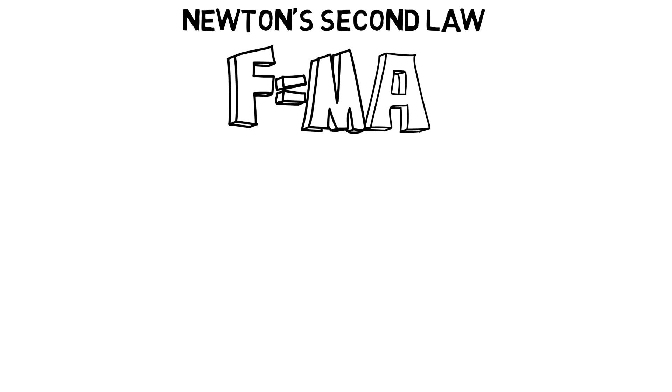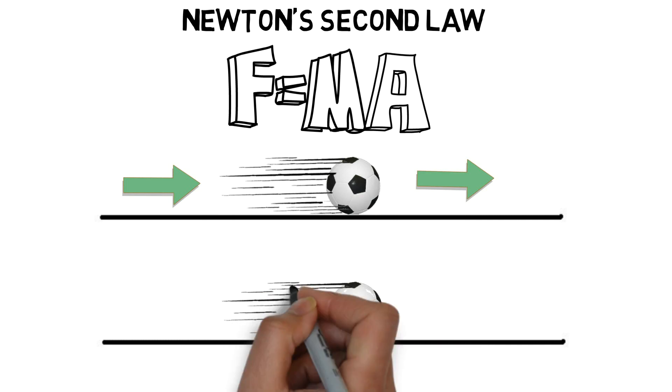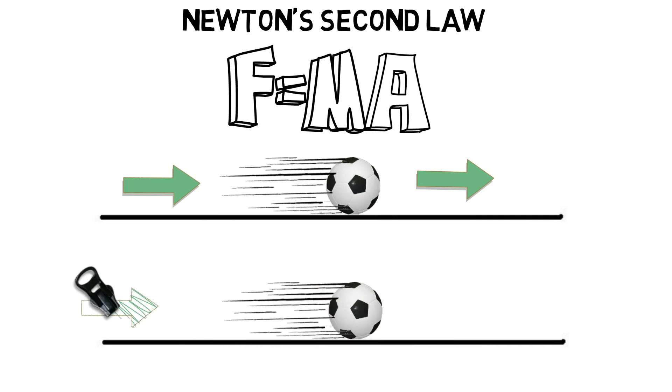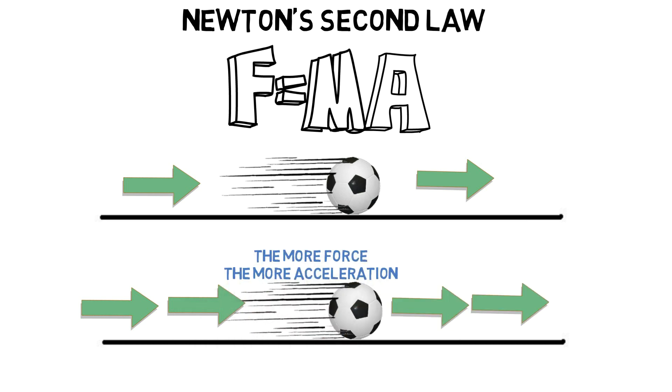For example, the more weight the soccer ball has, the slower it goes. The more weight the player has, the slower he can run. Heavier people kick farther than lighter people. Lighter people can run faster than heavier people. More force you apply, more the acceleration you get.